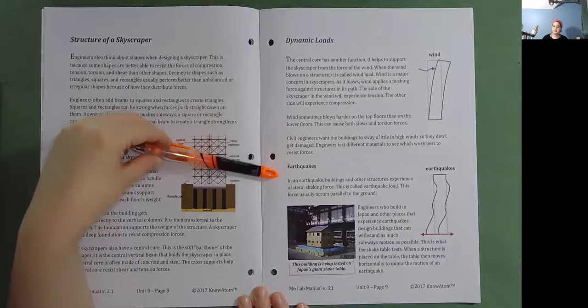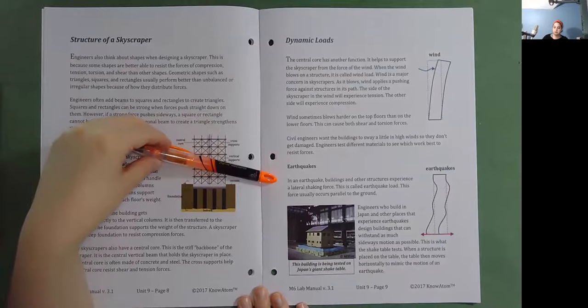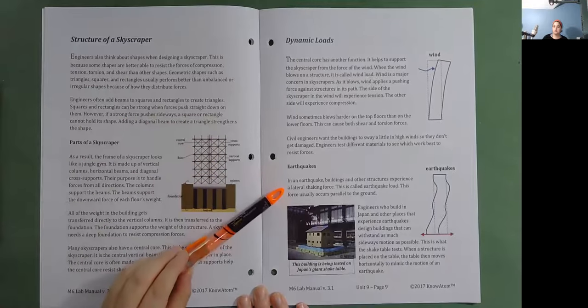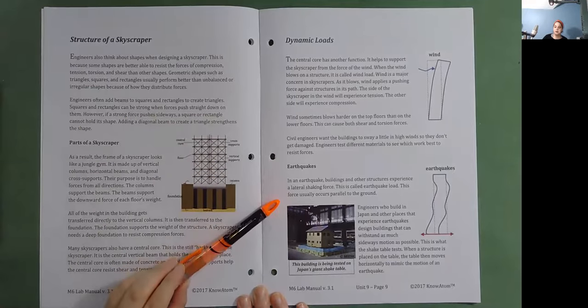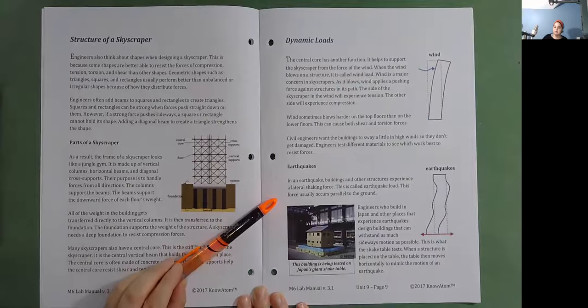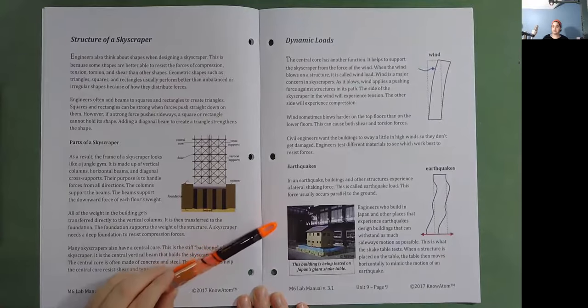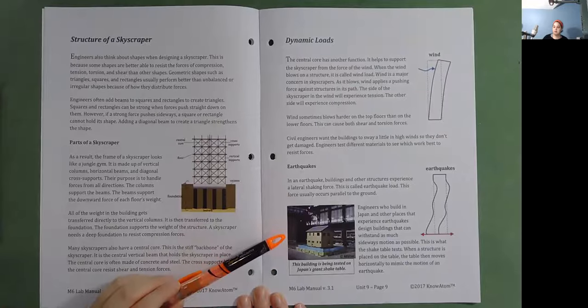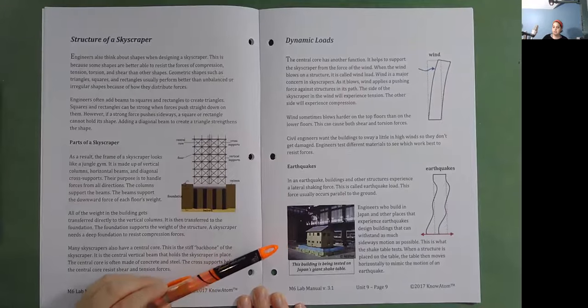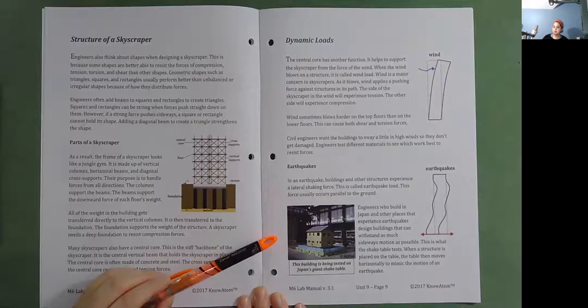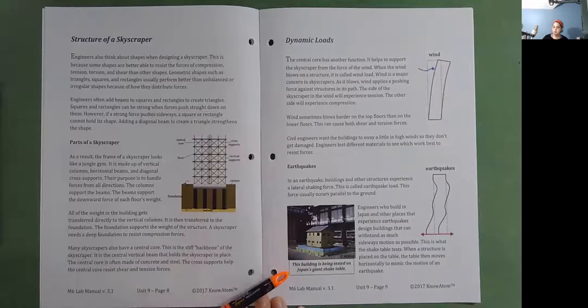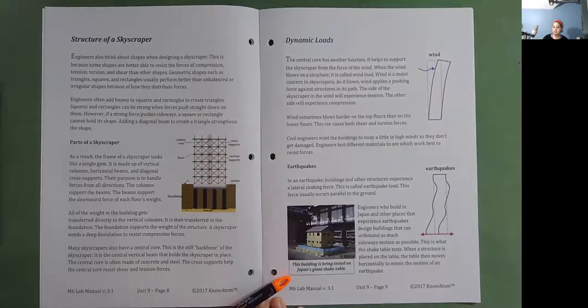Earthquakes. In an earthquake, buildings and other structures experience a lateral shaking force. This is called earthquake load. This force usually occurs parallel to the ground. Engineers who build in Japan and other places that experience earthquakes design buildings that can withstand as much sideways motion as possible. This is what the shake table tests. When a structure is placed on the table, the table then moves horizontally to mimic the motion of an earthquake. This building is being tested on Japan's giant shake table.